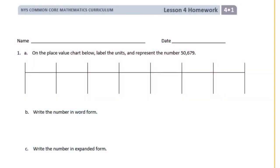Grade 4, Module 1, Lesson 4 Homework Number 1. On the place value chart below, label the units and represent the number 50,689. So let's start by labeling the units.